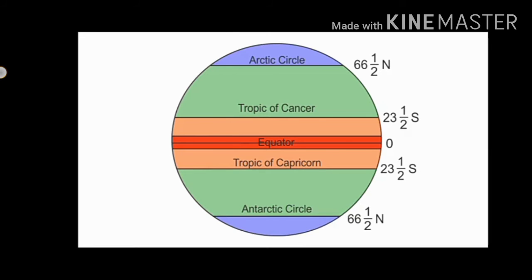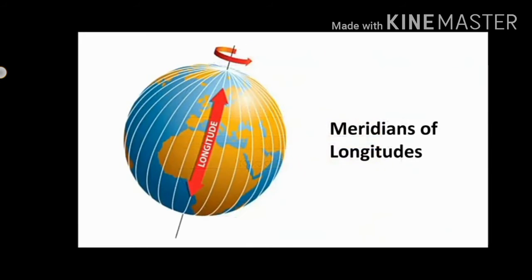Meridians of longitudes: The other set of lines are the semicircles. These lines join at the north and south poles. There are 360 degree meridians and have equal length.